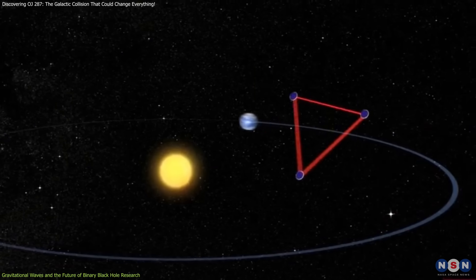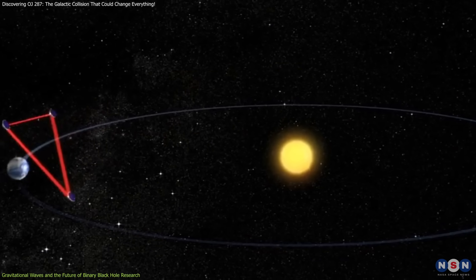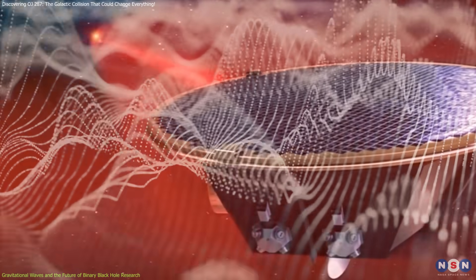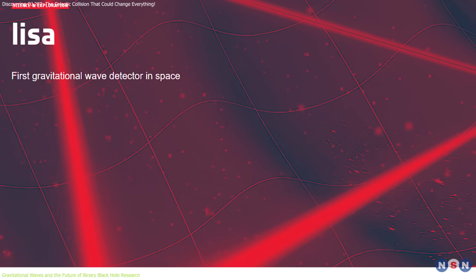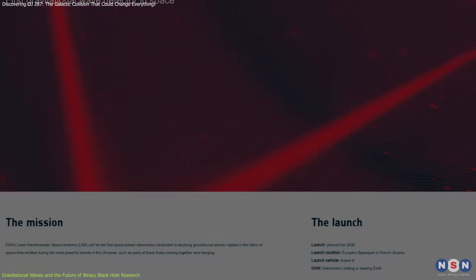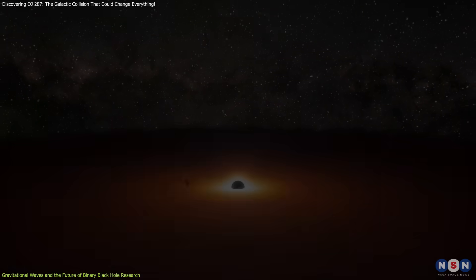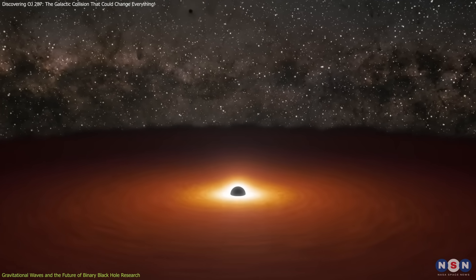Future space-based missions, such as the Laser Interferometer Space Antenna (LISA), are designed to detect these low-frequency gravitational waves. LISA, which is set to launch in the 2030s, will be capable of observing the in-spiral and eventual merger of supermassive black holes like those in OJ 287.